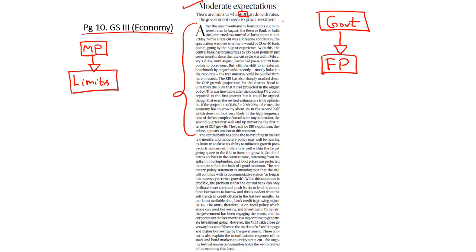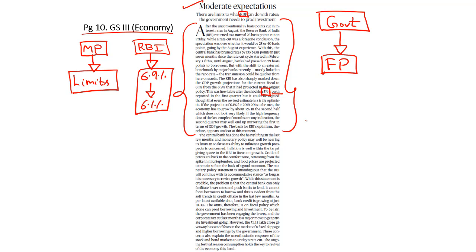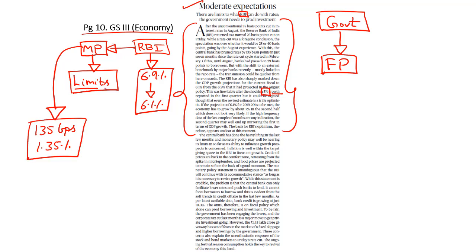The slowdown in the Indian economy is evident from the fact that growth in the first quarter was just 5%, one of the lowest in recent years. The RBI has revised its GDP forecast for this financial year from 6.9% to 6.1%, indicating a massive slowdown in investments and economic growth. The RBI has already reduced the repo rate by 135 basis points — that is by 1.35% — over the last 5 to 6 months. But there are limits to what the monetary policy can achieve, so now the ball is in the government's court to promote investments and growth through a prudent fiscal policy.